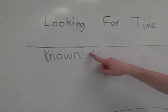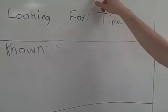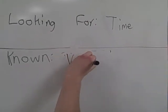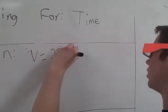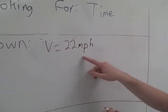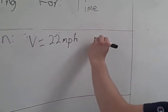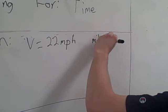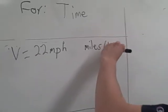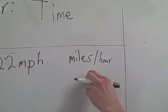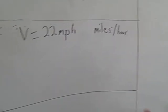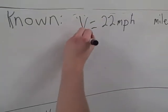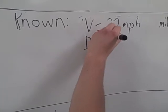In this case, we take our knowns, which are velocity equaling 22 miles per hour. And when you take MPH, you can change that to miles over hours, miles per hour. The dividing line means per. And we know the distance, which equals 44 miles.